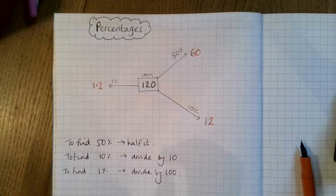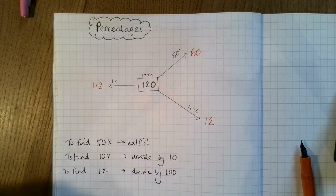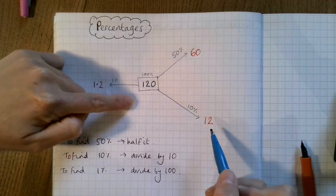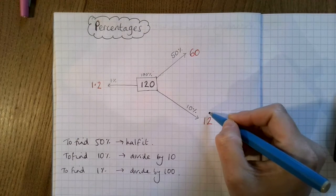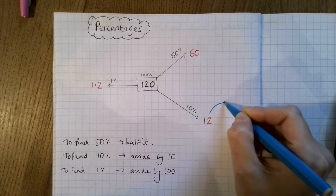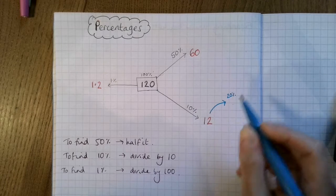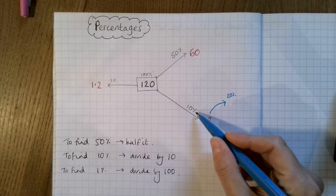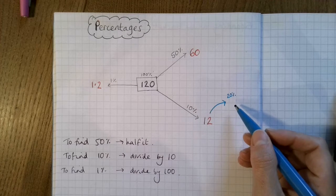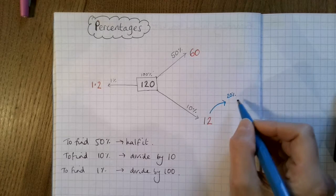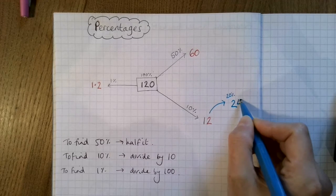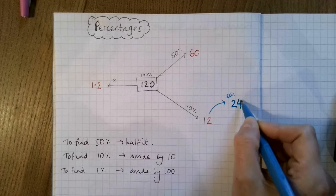So if we started with 10%, we could then go and find 20%. And how would we get from 10% to 20%? We'd double it. So double 10% is 20%. So that would be 24. Double 12 is 24.